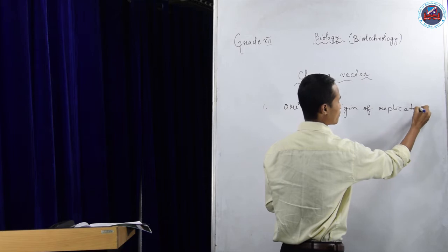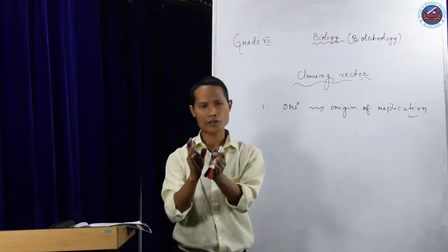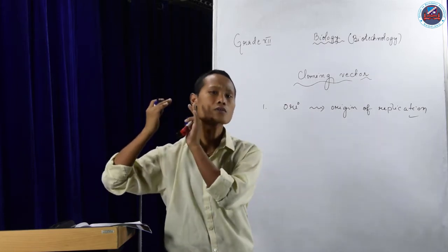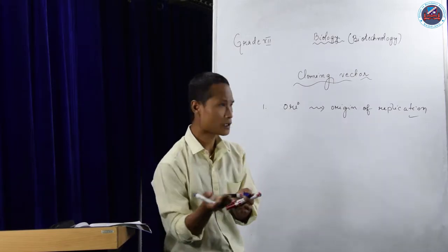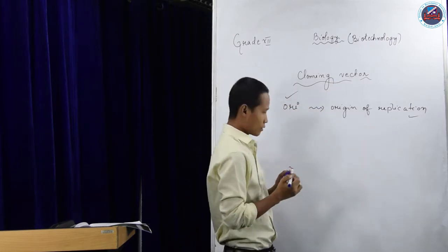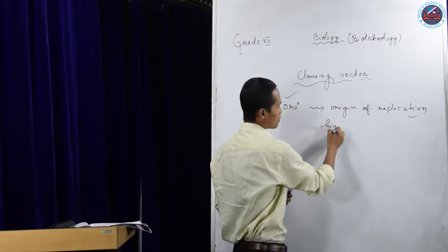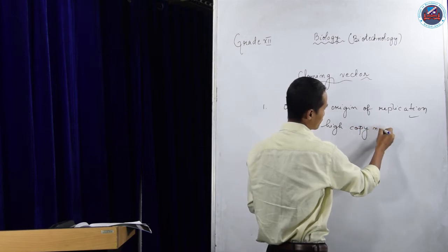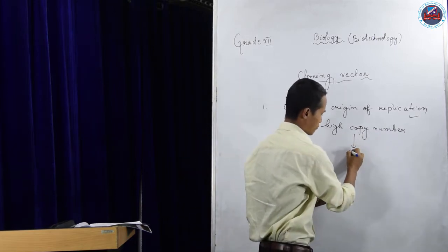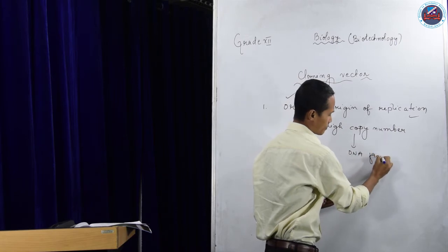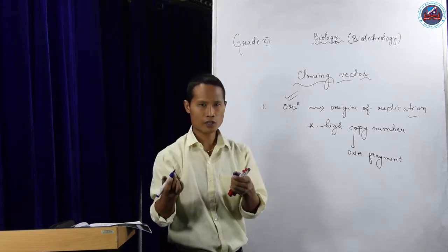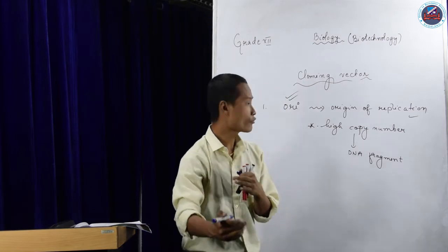In molecular biology, we have already discussed that ORI is a point or an area — a specific nitrogenous sequence — from where the replication is going to start, from where the copying of DNA is going to start. There must be an ORI in a cloning vector. And if you want to produce a high copy number of your DNA fragments or your target DNA, then there must be more ORI. ORI will control the copy number, or the cloning of the DNA fragments.